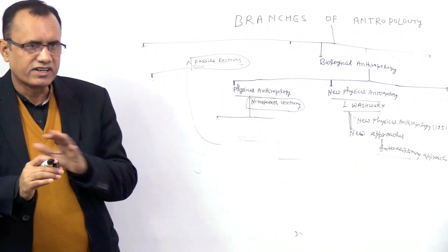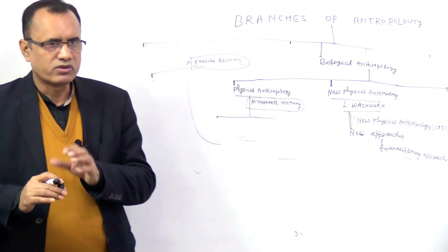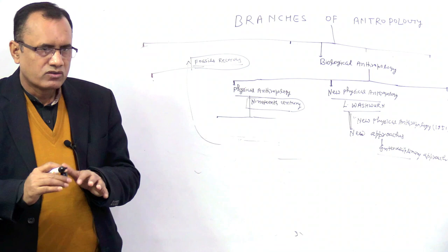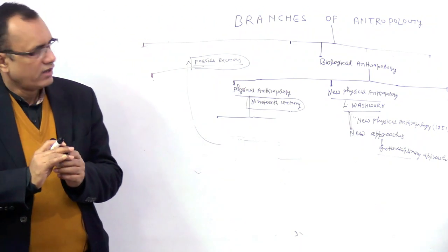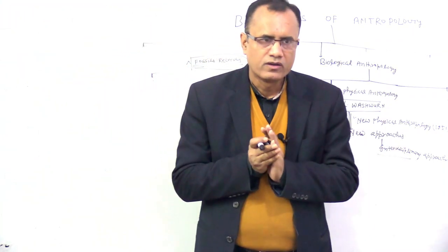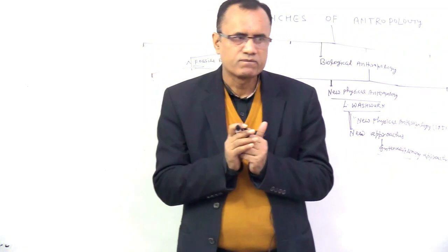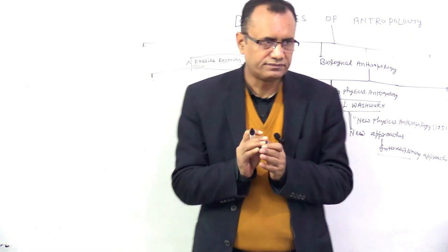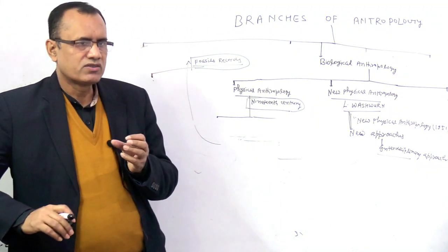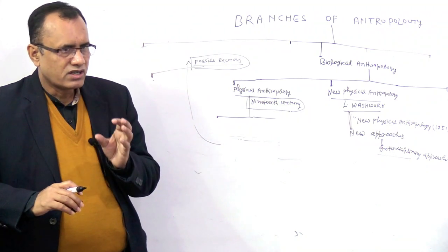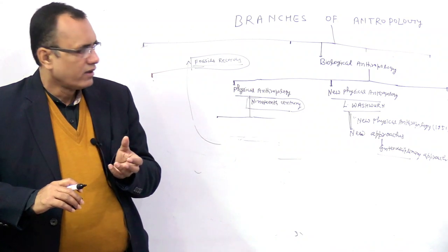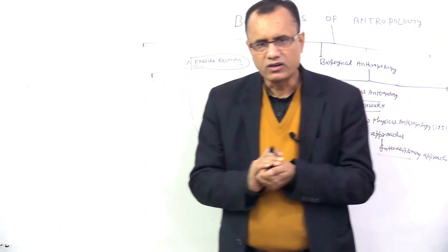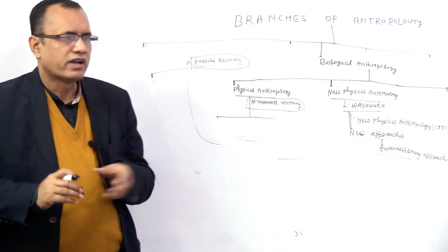There was development of Human Genetics, Population Genetics, Biochemistry, Molecular Biology, Protein Synthesis, Ecology, Environment, Computer Science, and Statistics. These multi-disciplinary methods and approaches are utilized for understanding human evolution. They also utilized these new methods for the study of Human Biological Variation. In the 19th century, the focus was mainly on racial classification, with little development of new methods. Now we use genetic markers for racial classification and the study of Human Biological Variation. This is known as New Physical Anthropology.